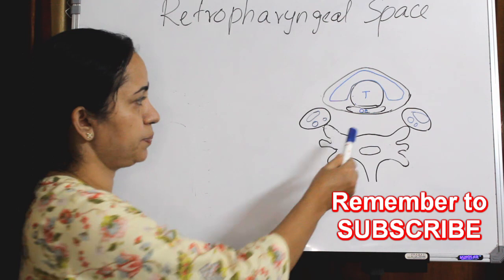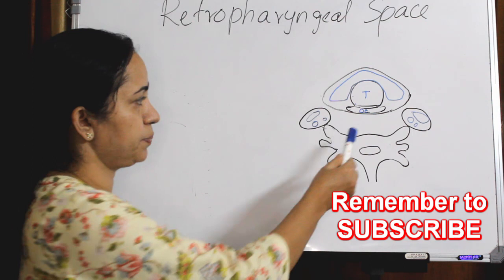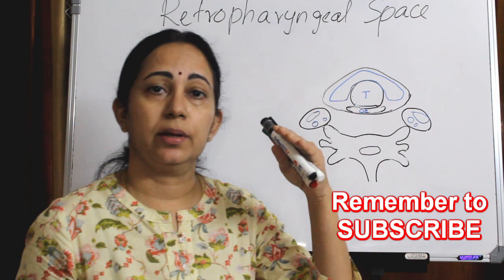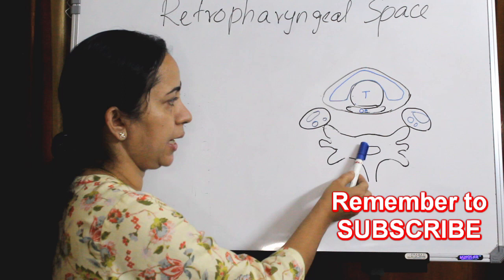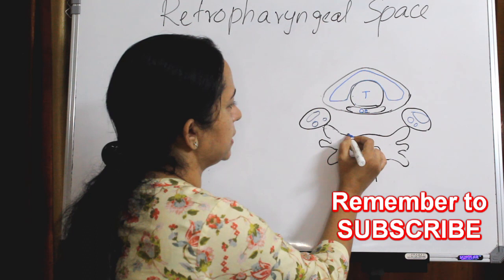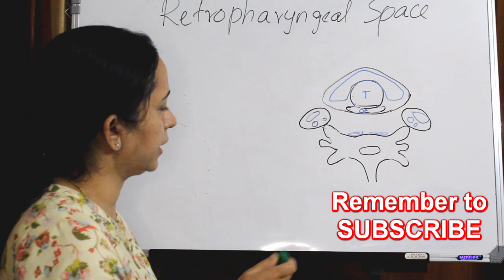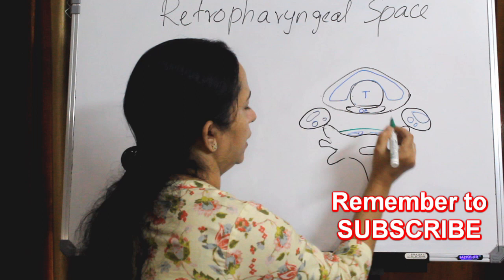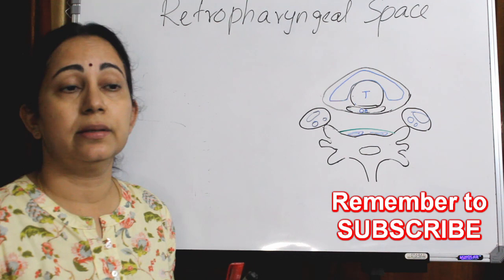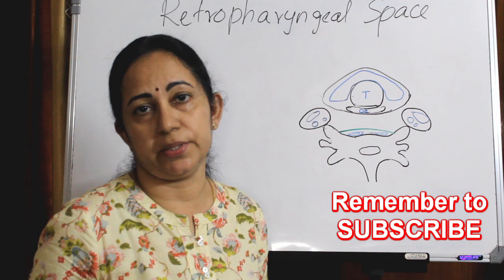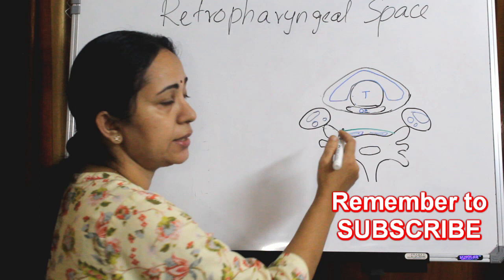In between the pharyngeal musculature and the prevertebral muscles is the retropharyngeal space. So this space lies posterior to the pharyngeal muscles — that is the pharynx and also the esophagus — and it is anterior to the prevertebral fascia and the prevertebral muscles. Anteriorly the boundary is the buccopharyngeal fascia, and posteriorly it is the prevertebral fascia.